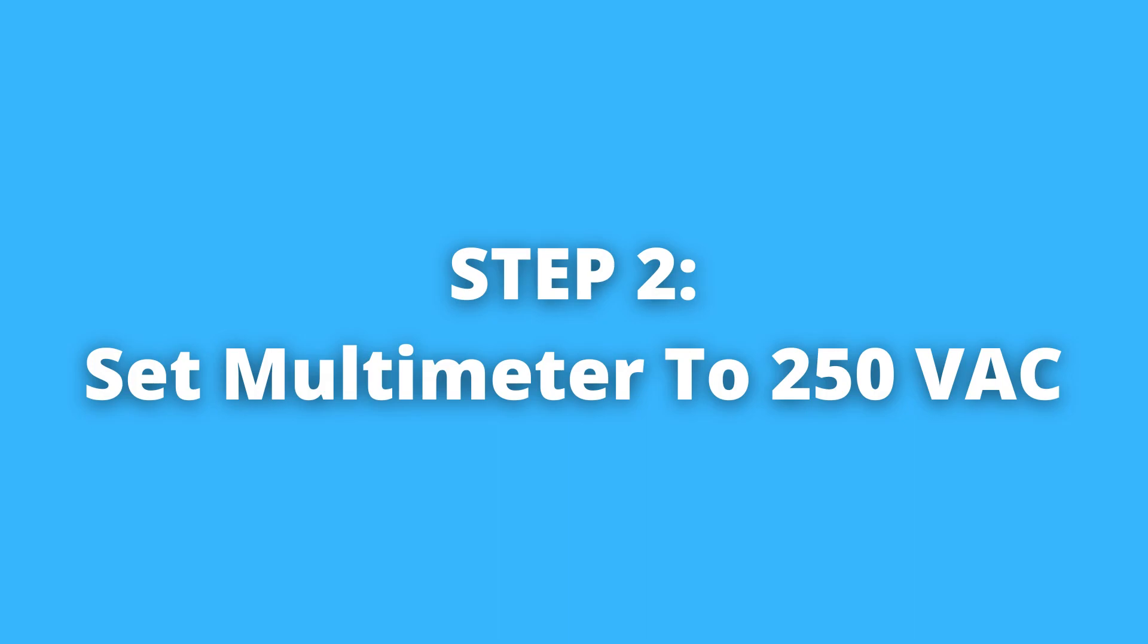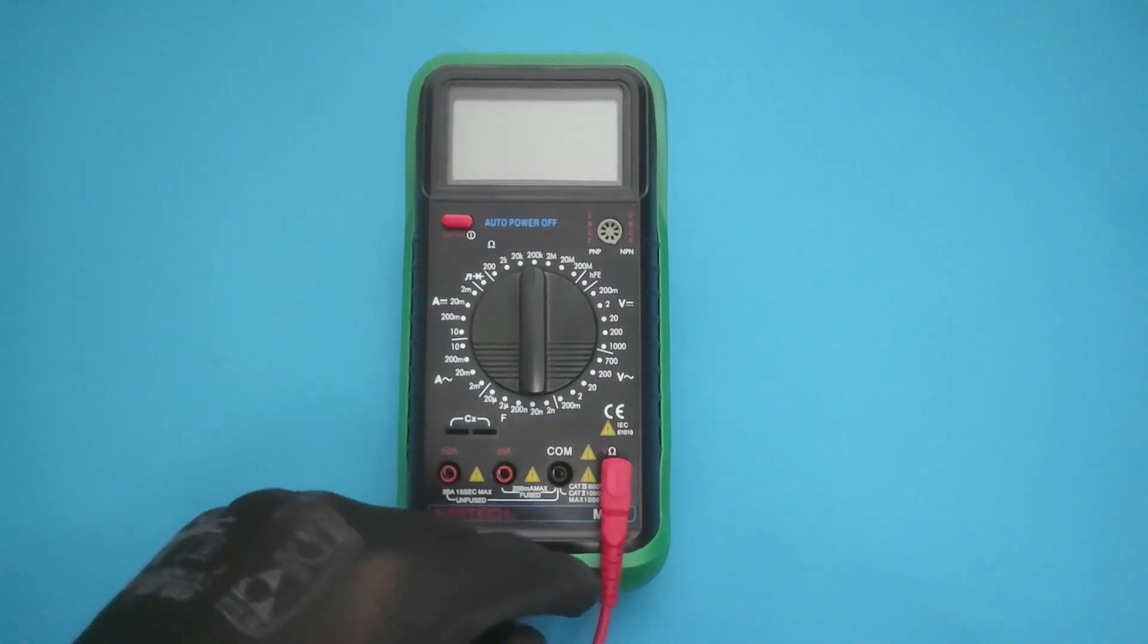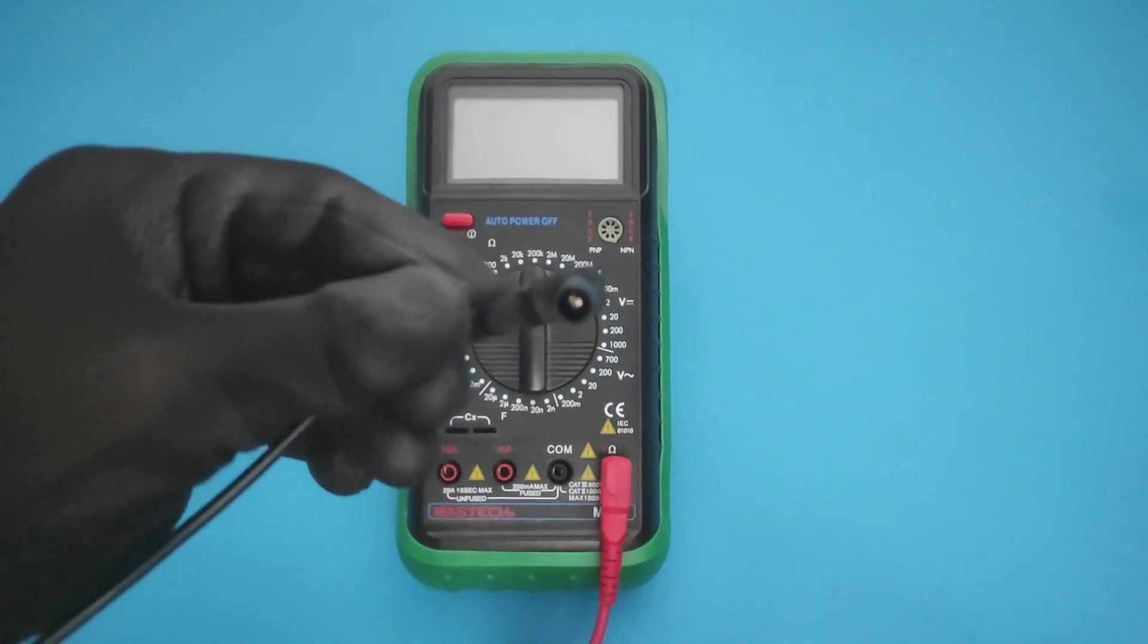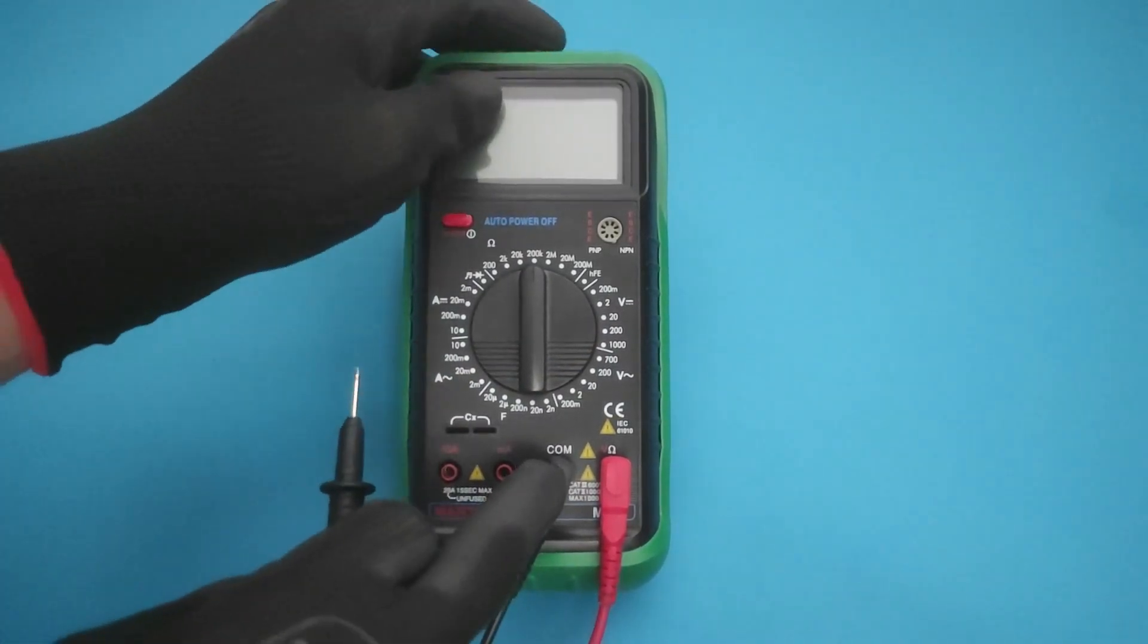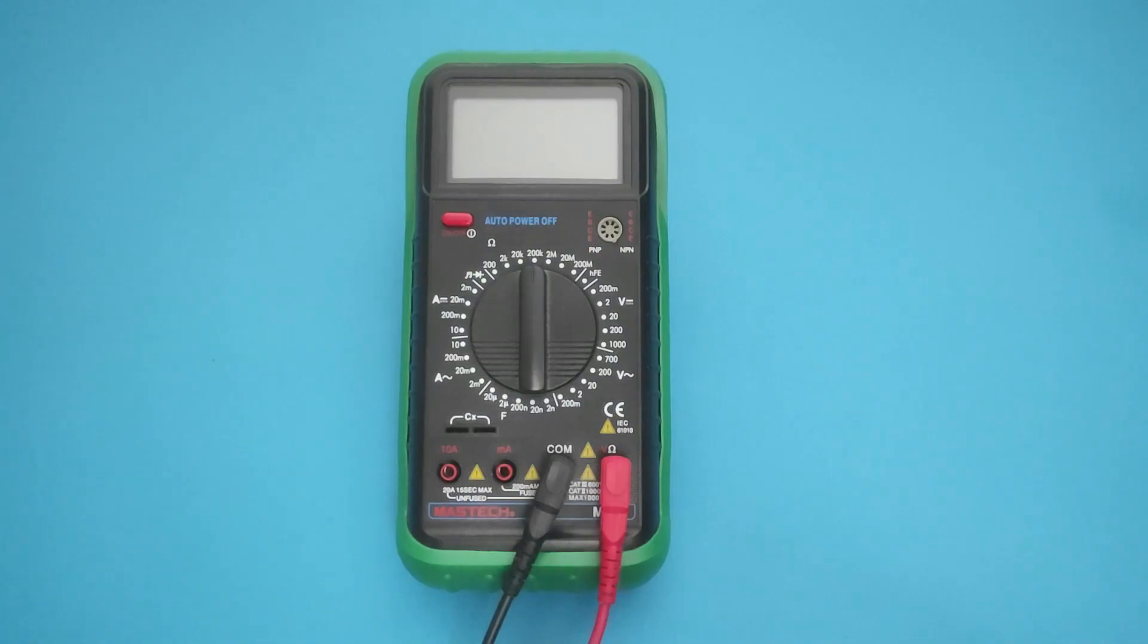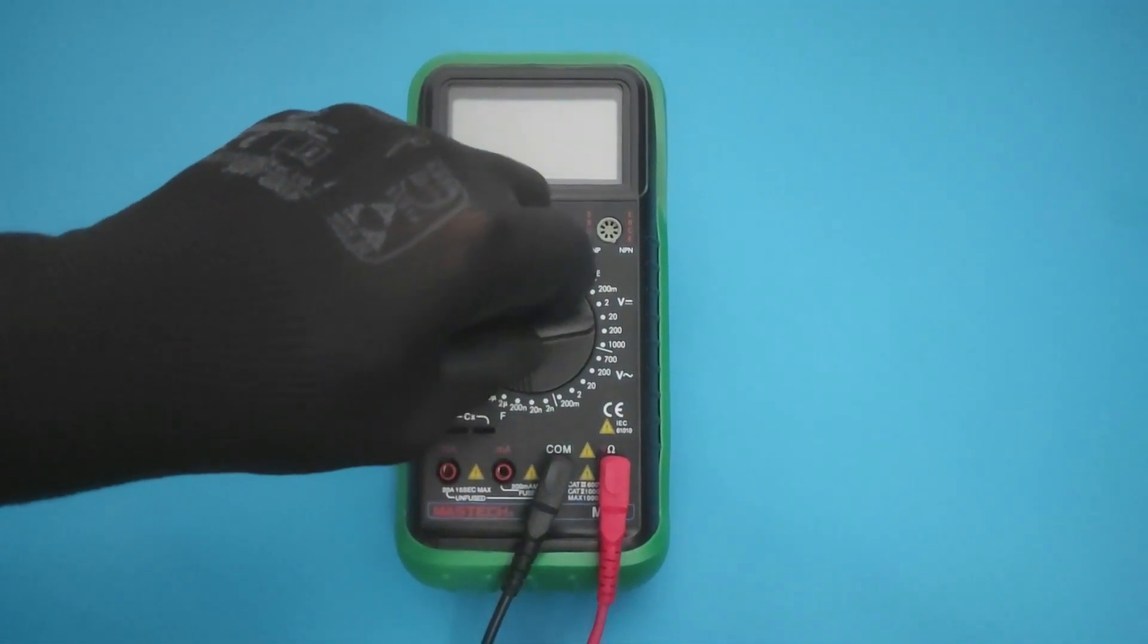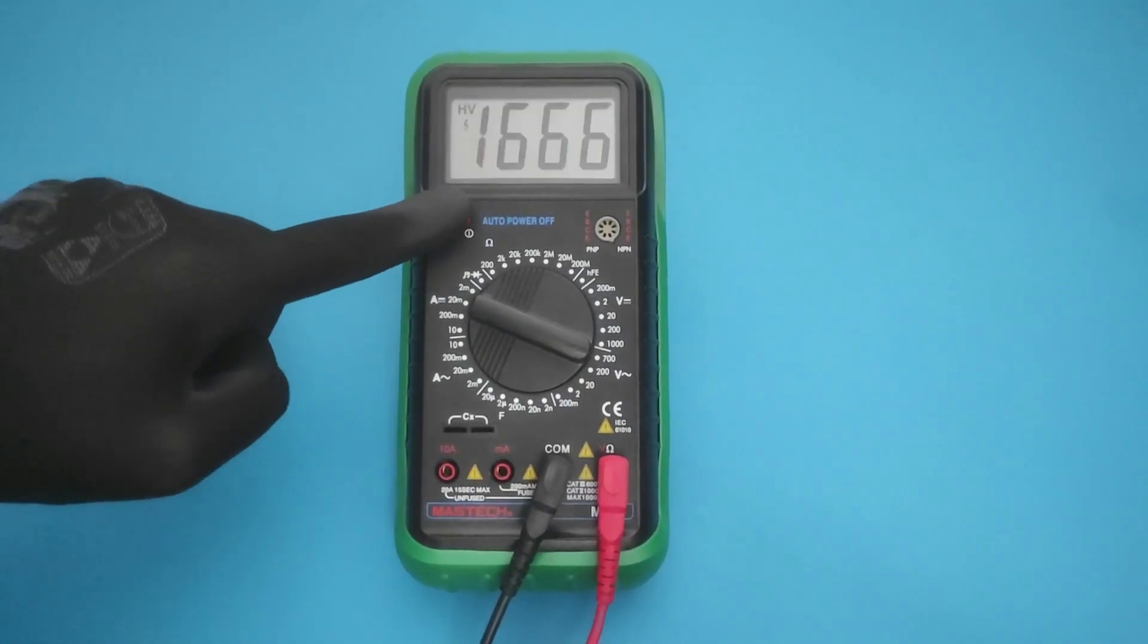Now we can move on to setting up the multimeter. Connect the probes to the multimeter like I did. Alternating current AC voltage is used by your household appliances, and you should set your multimeter to the highest range to acquire the most accurate measurement.